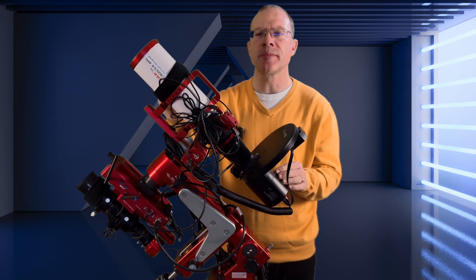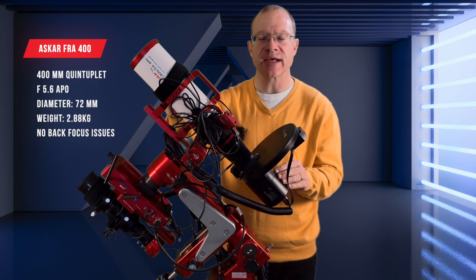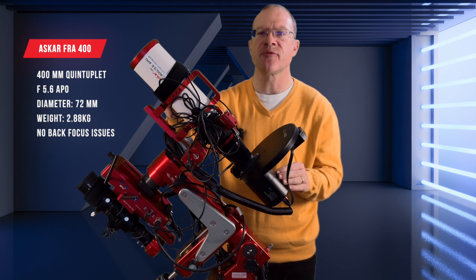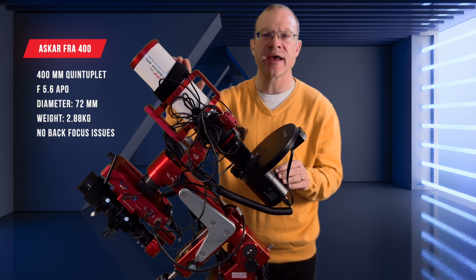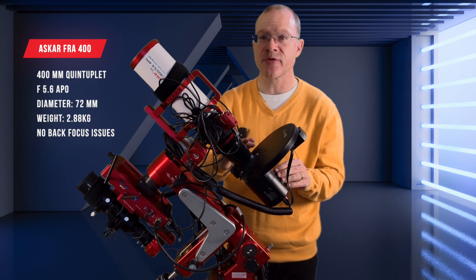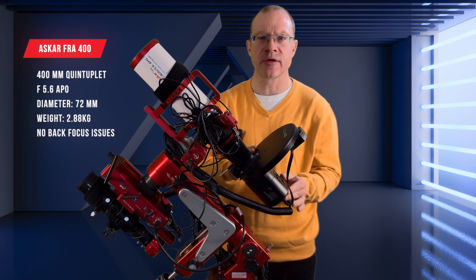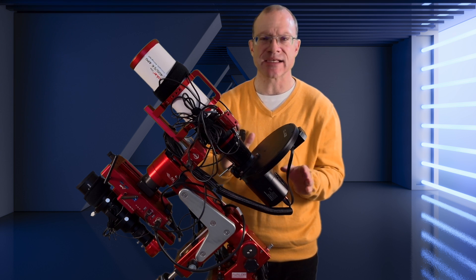But just to start, let's sum up the facts again. It is a 400mm focal length telescope, that's why it's called FRA 400. It has a speed of f5.6, which is rather fast, and back focus doesn't matter. You simply screw the camera on it, you focus, and that's it. Everything's fine.